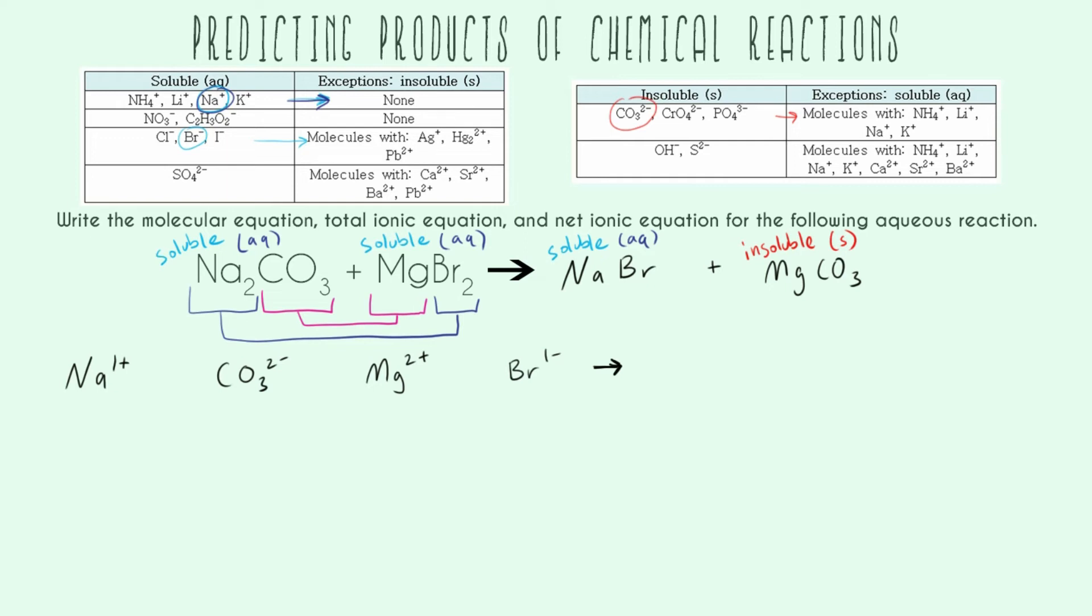So now that we have this, we're able to go ahead and start filling out our total ionic equation a little bit more. So the big thing that we get from knowing that magnesium carbonate is insoluble is that it's going to look like this, MgCO3 solid. It is not going to be separate ions. And like we already found out, sodium bromide is soluble. So we're just still going to have Na one plus and Br one minus.